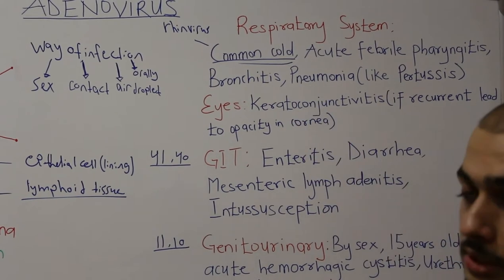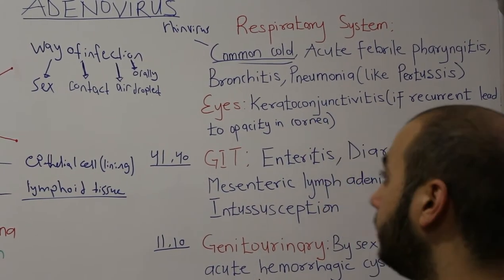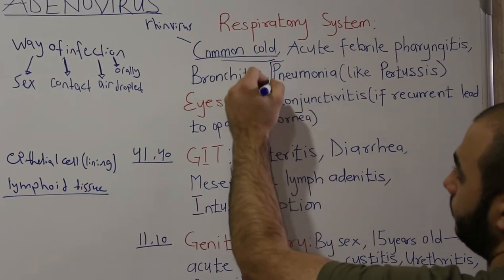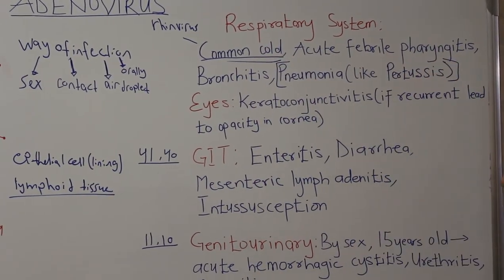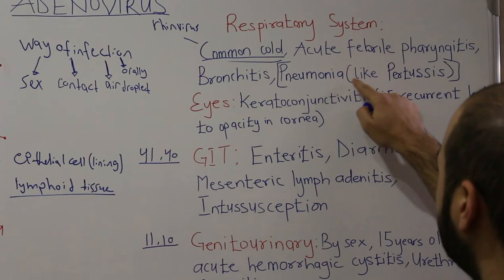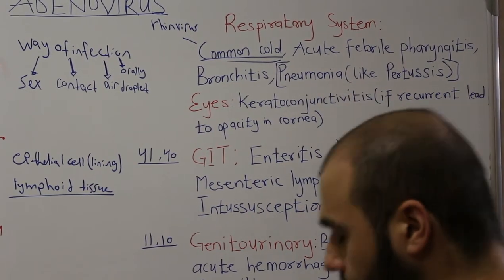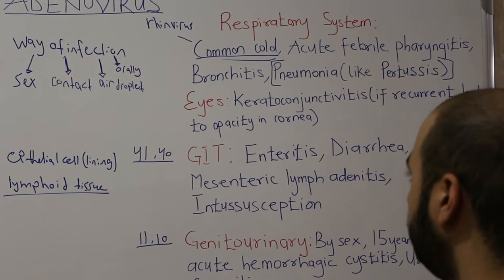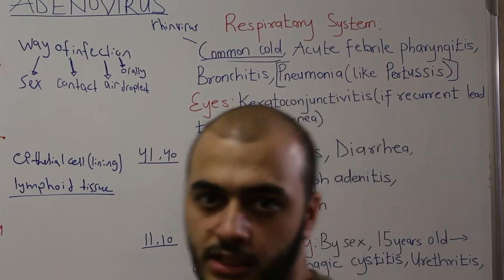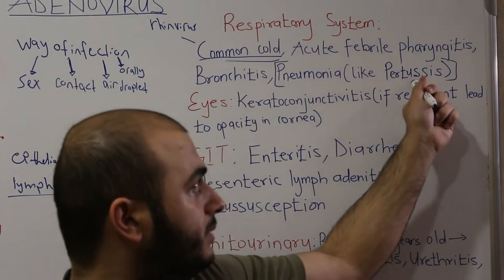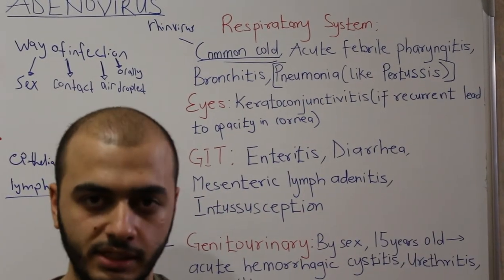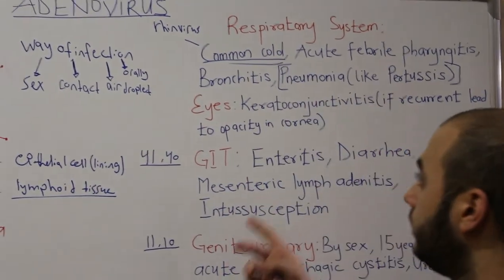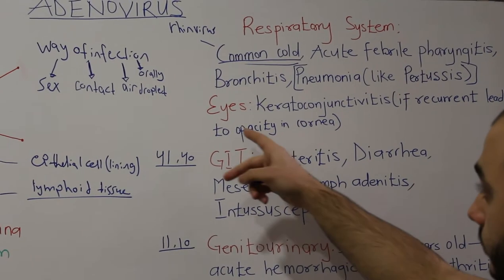Moving down the respiratory tract, adenovirus can cause lower respiratory tract infections like pneumonia. What is unique about this adenovirus pneumonia is that it has pertussis-like symptoms — the child will be coughing and the cough sounds like whooping cough.